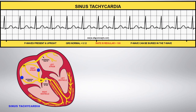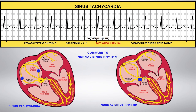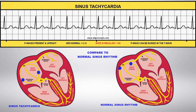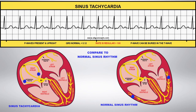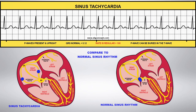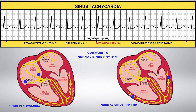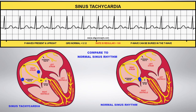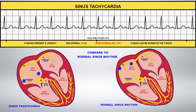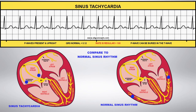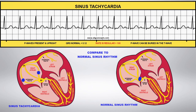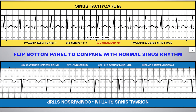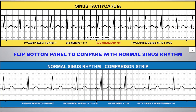Sinus tachycardia originates in the SA node and follows the normal conduction pathway; however, the heart rate is greater than 100 beats per minute. You can flip the comparison strip on the bottom panel to compare this rhythm to normal sinus rhythm.